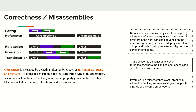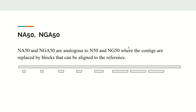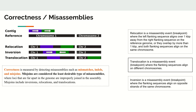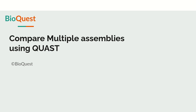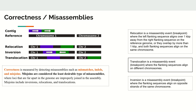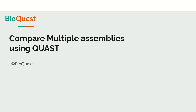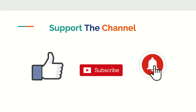In summary, we covered N50, NG50, and related values, and examined how to evaluate assembly correctness. In the next videos, we will compare five assembly tools — including Shasta, Miniasm, and Kano — using QUAST to evaluate all these parameters on actual data. Thanks for watching; please like, share, and subscribe to the channel.